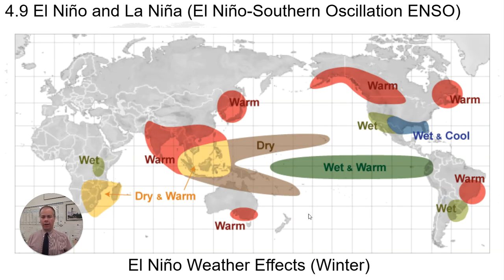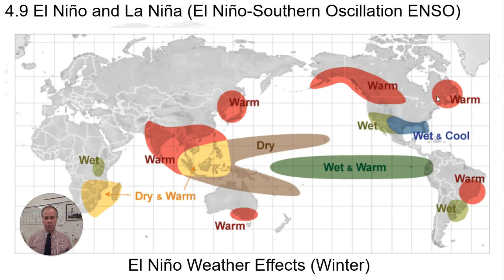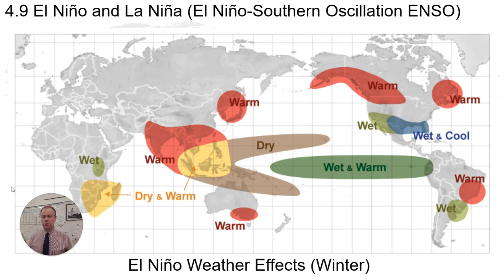El Niño events affect global climate throughout much of the Earth. For us, an El Niño episode leads to warmer conditions in the winter in the northwest. It varies from place to place — it's drier in Australia because of that shift, and wetter along the coast of South America. These wind currents in the Pacific have global effects.